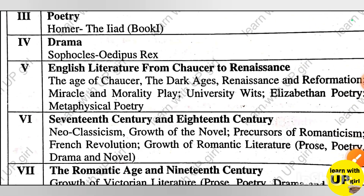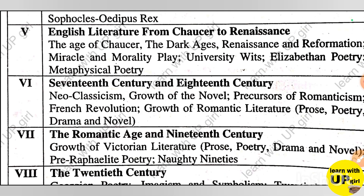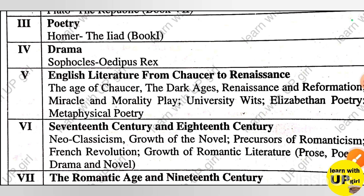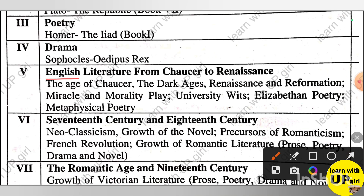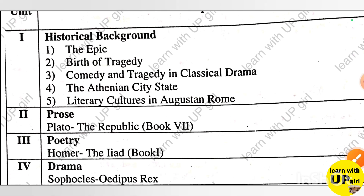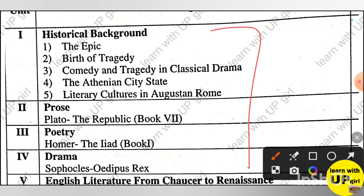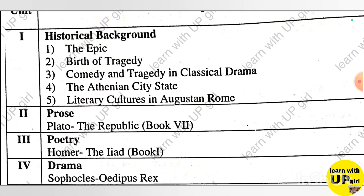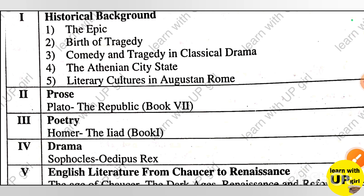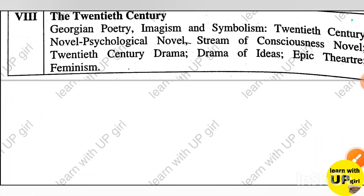Paper 1st, 5th Unit: English Literature from Chaucer to Renaissance. The 2nd topic is The Dark Ages, which we will cover in this video. We have made videos before on the Age of Chaucer and the other units. You will find the links in the description to complete the playlist, which will be helpful for your exam.